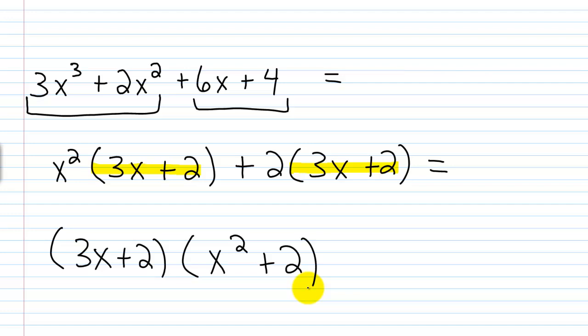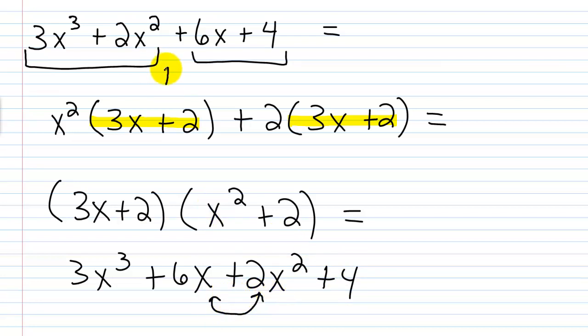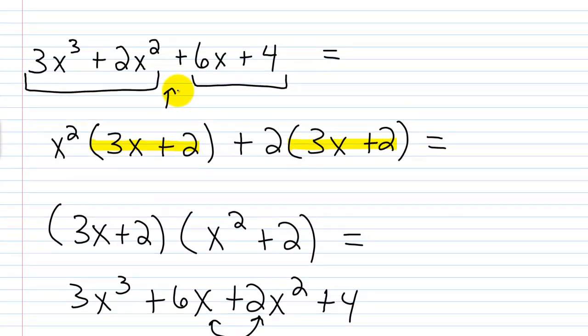I always like to go back and check to make sure that I got the correct factoring. The way I do that is with FOIL. 3x times x squared would be 3x cubed. Then 3x times 2 would be plus 6x. Then 2 times x squared would be plus 2x squared. Then 2 times 2 would be plus 4. So if I reorder these terms, I'm going to get this back: 3x cubed plus 2x squared plus 6x plus 4.